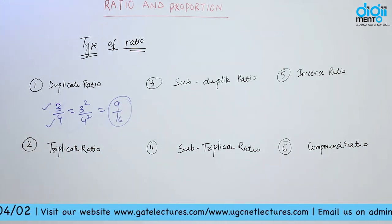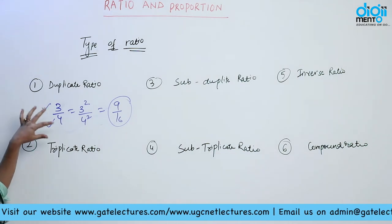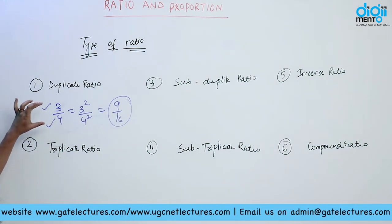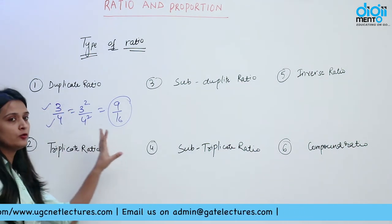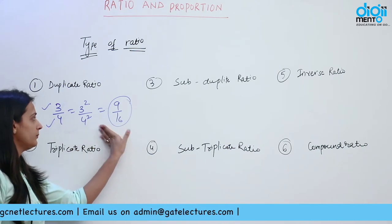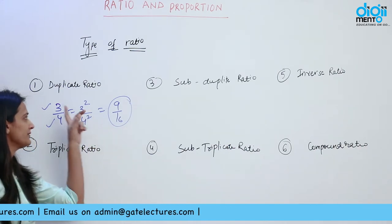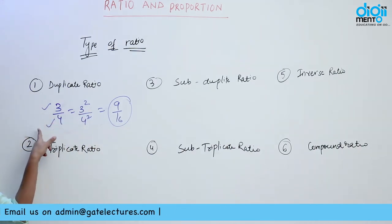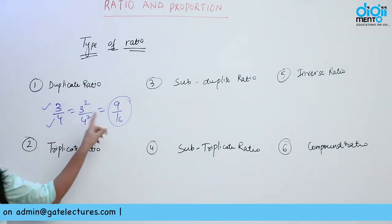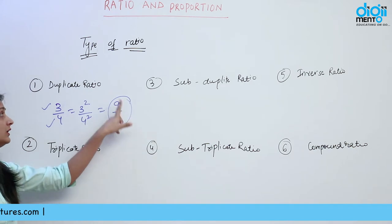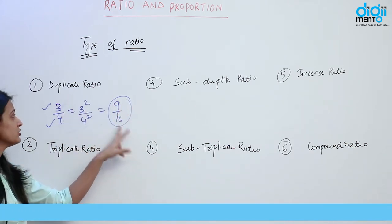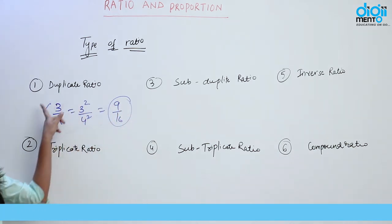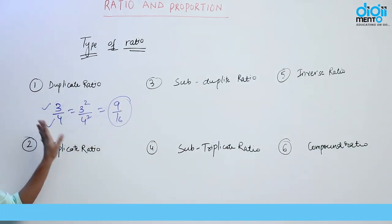Duplicate ratio kya hai? Jo dho numbers ke square ka jo ratio hai, usko bolte hain duplicate ratio. Hamne example li hai 3 by 4 — 3 ka square kitna hoga? 9 aur 4 ka square kitna hoga? 16. Toh jo hai 9 by 16 jo hai, humara duplicate ratio hai kiska? 3 by 4 ka.